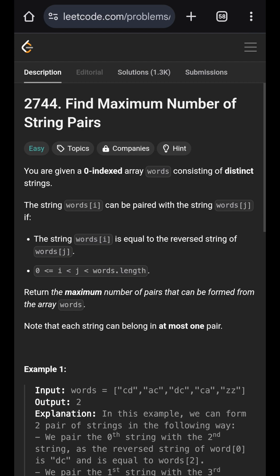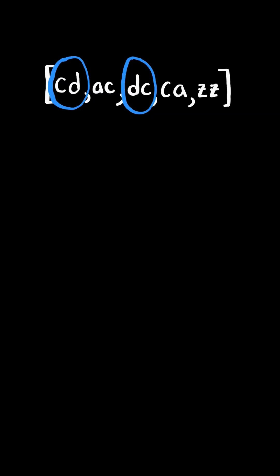Find maximum number of string pairs. If a word is equal to the reverse of another word, then it's a pair. AC and CA are another pair because they are the reverse of one another. Return the number of pairs that can be formed.